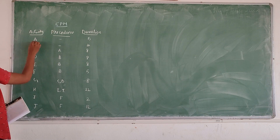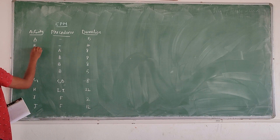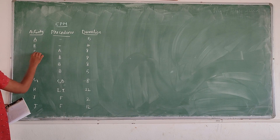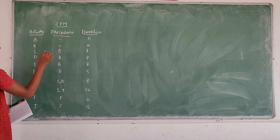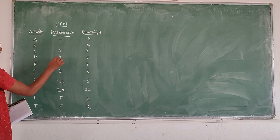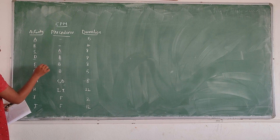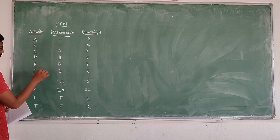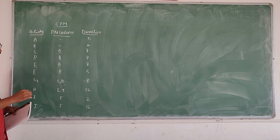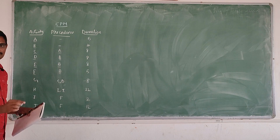For activity A there is no precedence, and activity B there is no precedence. Activity C, the precedence is A. Activity D, the precedence is B. Activity E, the precedence is B, and activity F, the precedence is also B. The corresponding duration is also given.